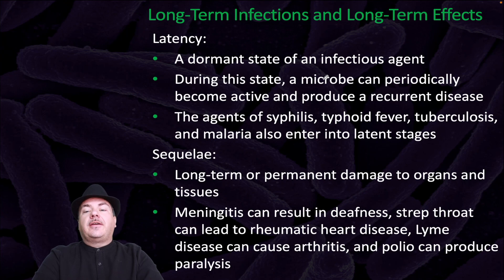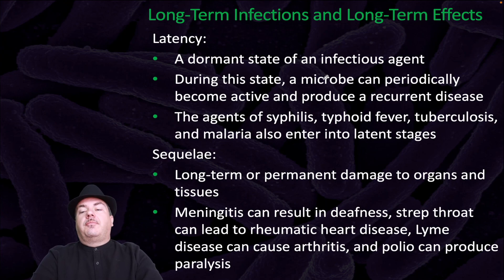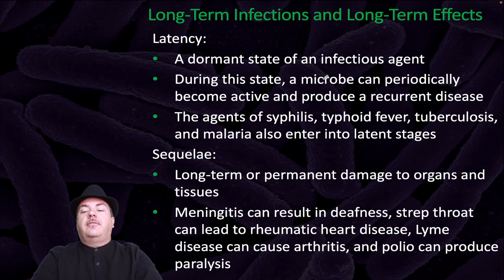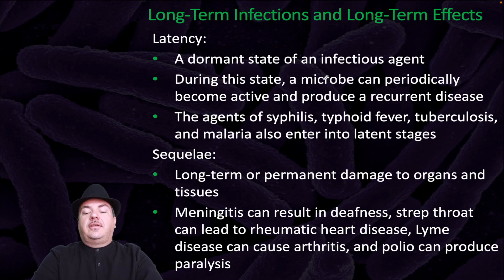Latency is a dormant state of an infectious agent during which the microbe can periodically become active and produce a recurrent disease. The agents of syphilis, typhoid fever, tuberculosis, and malaria also enter latent stages. Sequelae are long-term or permanent damage to organs and tissues — for example, meningitis can result in deafness, strep throat can lead to rheumatic heart disease, Lyme disease can cause arthritis, and polio can produce paralysis.